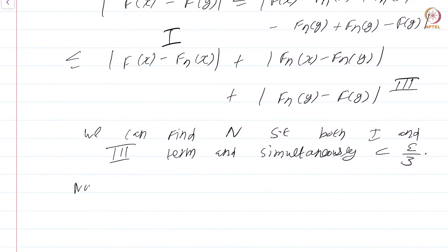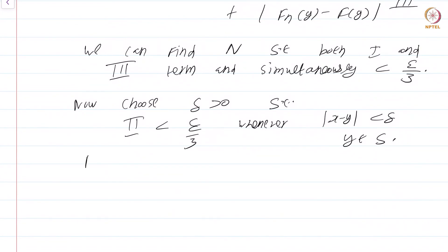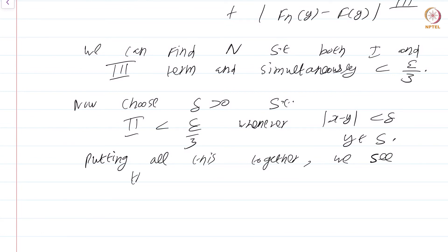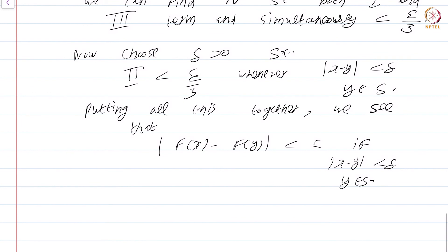Here is the crucial fact: by uniform convergence, we can find N such that both the first and third terms are simultaneously less than epsilon/3, no matter what points x and y we choose in S. Then choose delta > 0 such that the middle term is less than epsilon/3 whenever |x - y| < delta and y in S, using continuity of f_N. Putting all this together, |f(x) - f(y)| < epsilon whenever |x - y| < delta and y in S. Hence f is continuous.